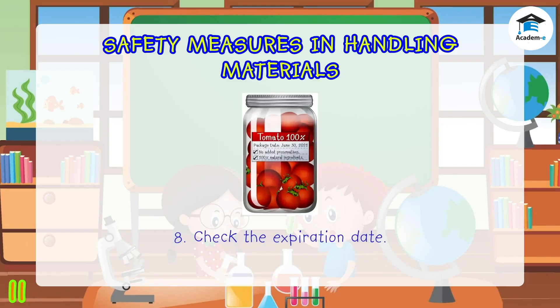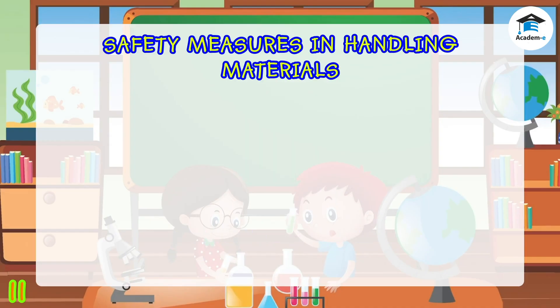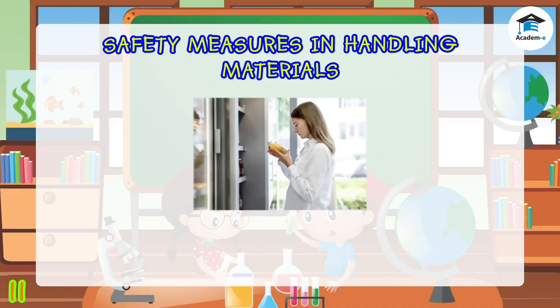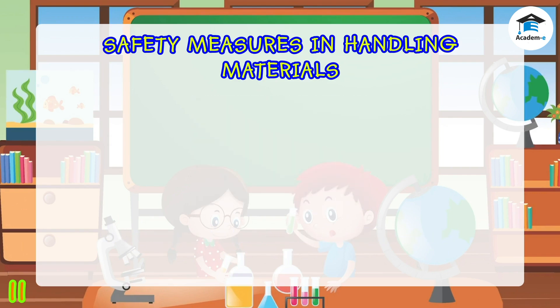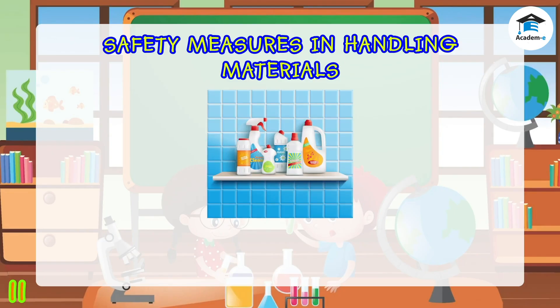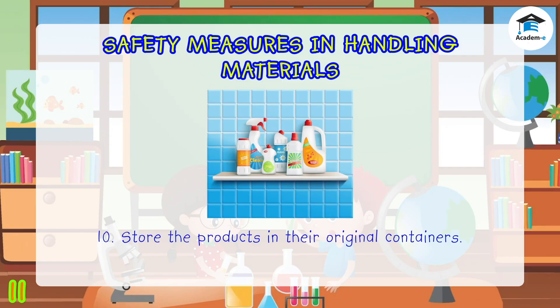Eight: check the expiration date of canned goods and other products. Nine: always read labels before handling materials. Ten: store the products in their original containers.